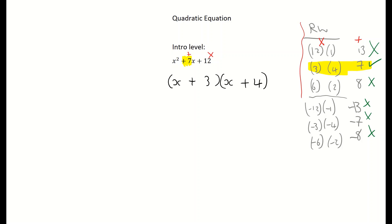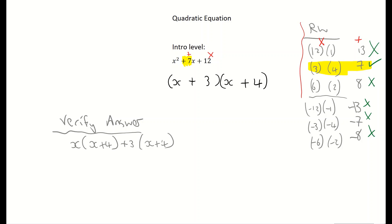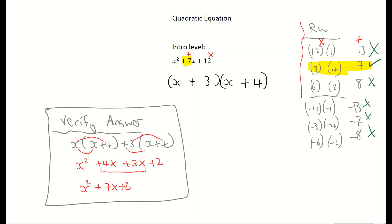To verify: multiply out (x + 3)(x + 4). That gives x squared plus 4x plus 3x plus 12, and combining like terms gives x squared plus 7x plus 12 — which is exactly what we started with. Factorizing and multiplication are a continuous loop.